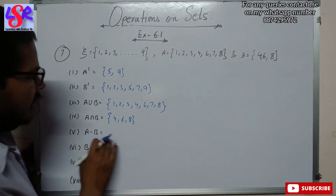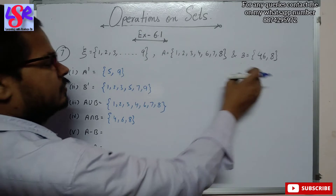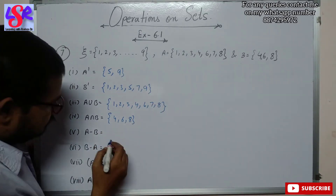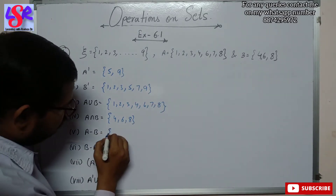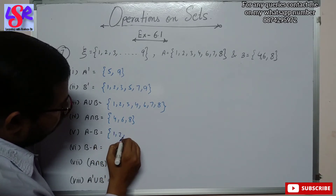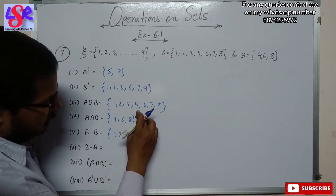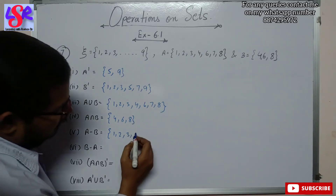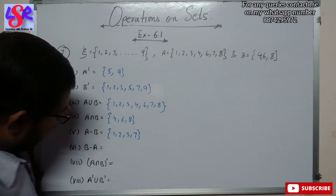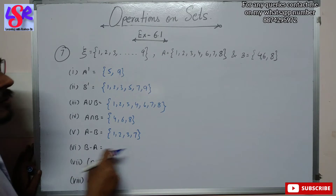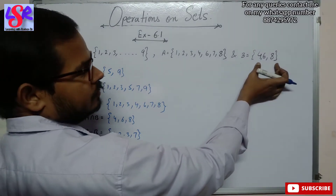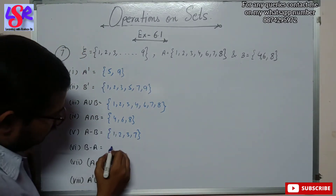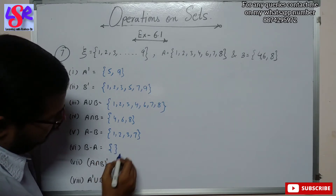Then we are having A minus B. In A minus B we are not going to write all the common terms from set A. So we remove 4, 6, 8 and are left with 1, 2, 3 and 7. Then B minus A — all terms of B are already in set A, so we get an empty set.